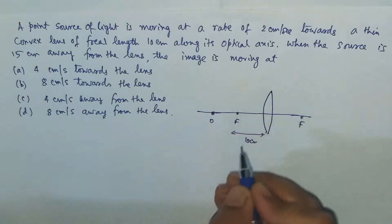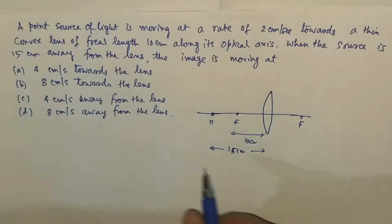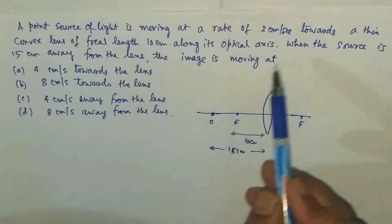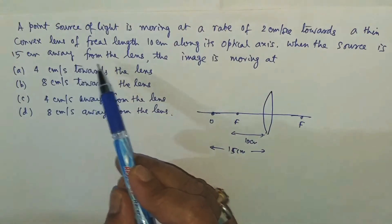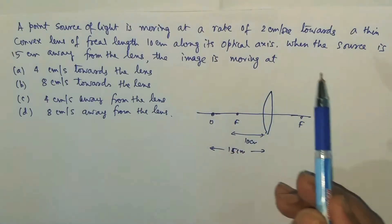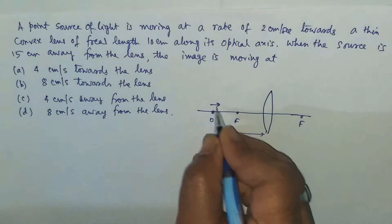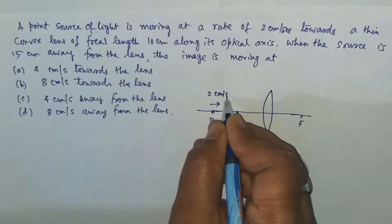This is the object, it is 15 cm away from the lens. And in which direction is it moving? At what rate is it moving? It is moving at 2 cm per second towards this thin lens. This is 2 cm per second, the velocity of the object towards that.